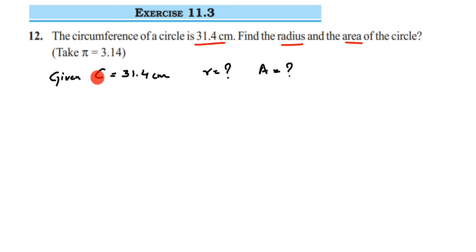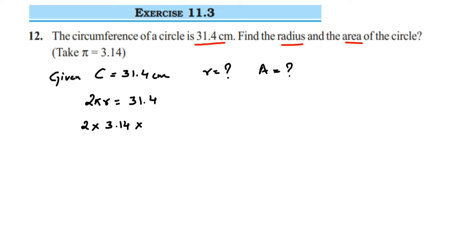We know that circumference of a circle, C, is equal to 2πr. So 2πr will be equal to 31.4. Now we're going to take the pi value as 3.14 and substitute: 2 into 3.14 multiplied by radius equals 31.4.